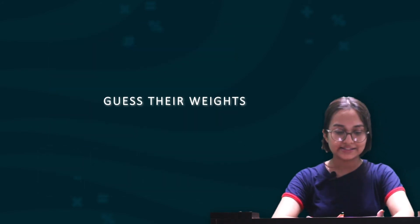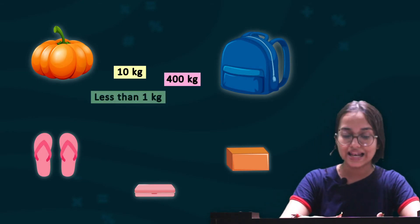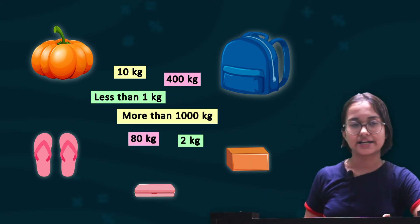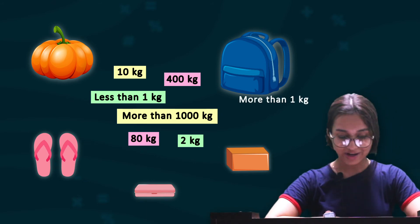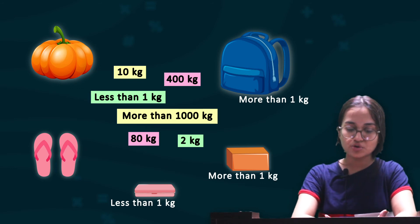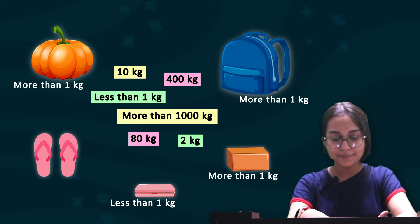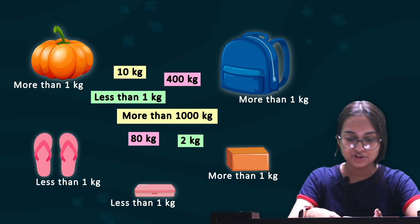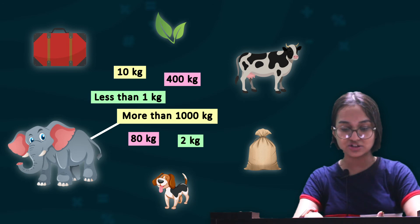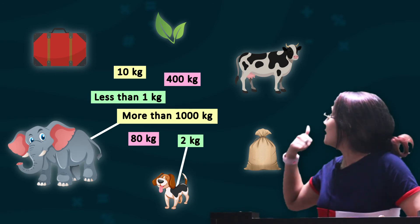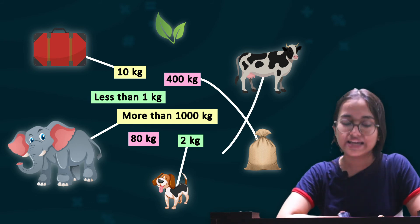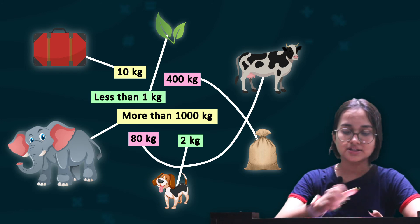Then we have 'Guess Their Weights and Match.' The weight categories given are: 10 kgs, 400 kgs, less than 1 kg, more than 100 kgs, 80 kgs, and 2 kgs. Your school bag weighs more than 1 kg, your geometry box less than 1 kg, a brick more than 1 kg, a pumpkin more than 1 kg, and a pair of slippers less than 1 kg. For the matching exercise: the elephant matches with more than 1000 kgs, the dog with more than 2 kgs, the bag with 400 kgs, the suitcase with 10 kgs, the cow with 80 kgs, and the leaf with less than 1 kg.